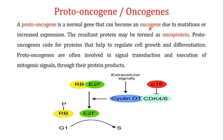When a proto-oncogene is converted into an oncogene by mutation, the resulting protein is sometimes called an oncoprotein. What proto-oncogenes normally do in the cell is help regulate cell growth and differentiation. They are very important and are involved in signal transduction and the execution of mitogenic signals through their protein products.